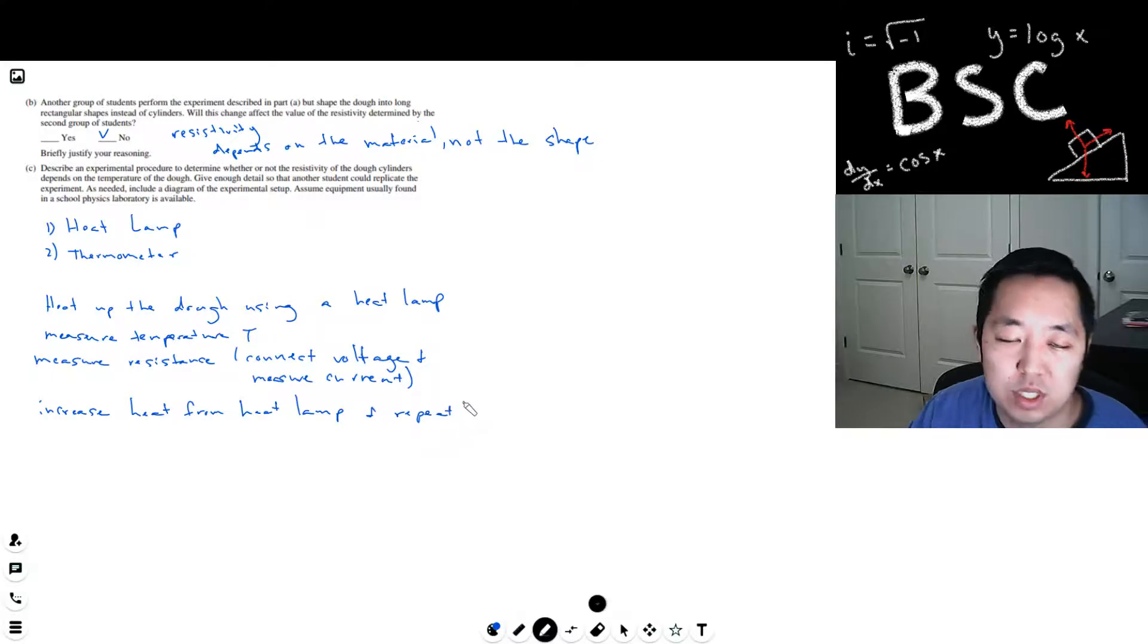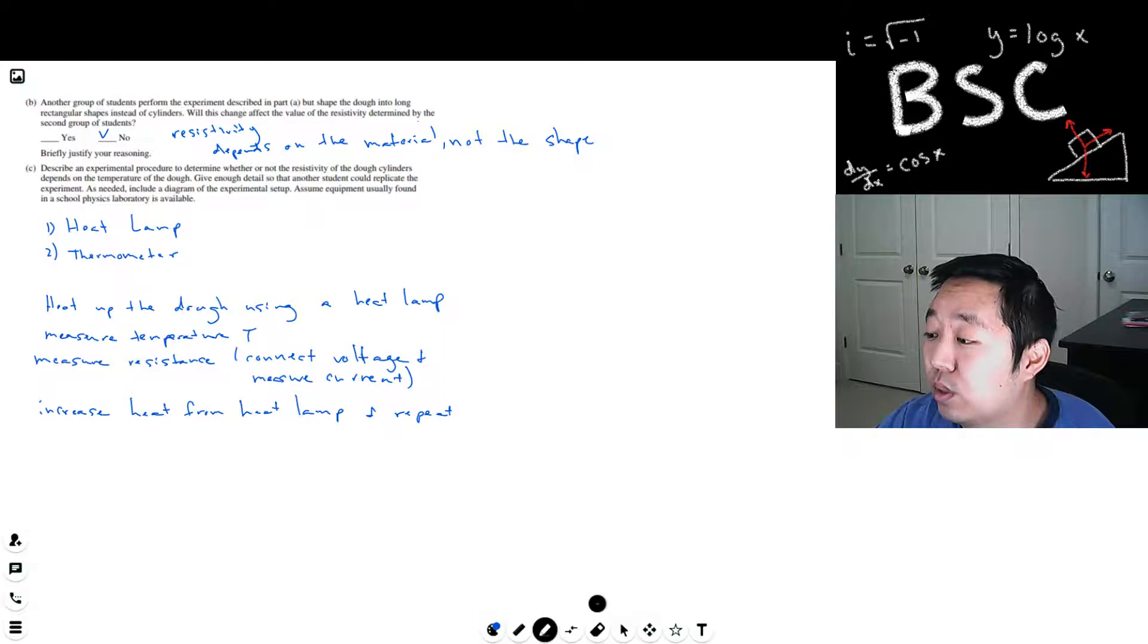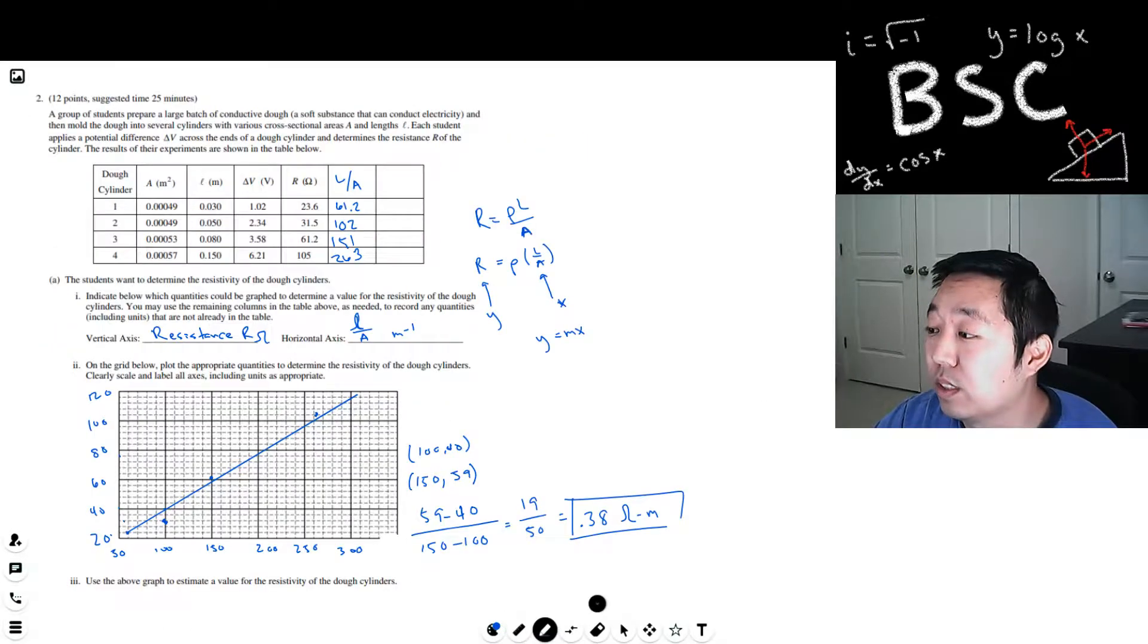However would be enough detail to write it out kind of like the previous experiment. Measure the resistance and then record the two. Then increase heat from heat lamp and repeat. That's basically what you would do. You would just heat it up, change the temperature a little bit more and then undo it again. So let's see if that was sufficient for the scoring guidelines.